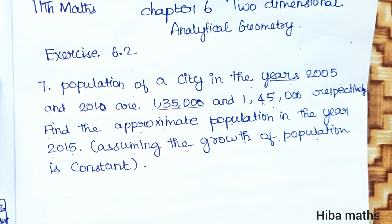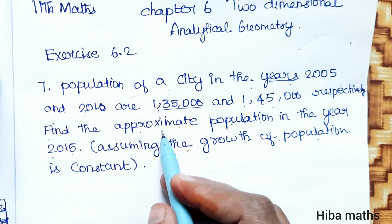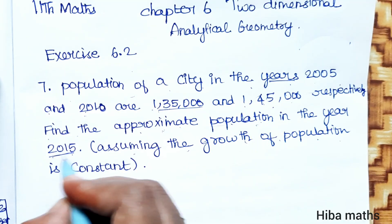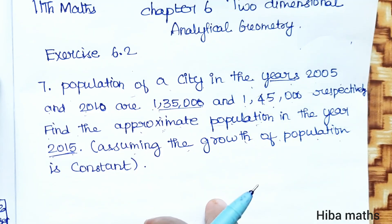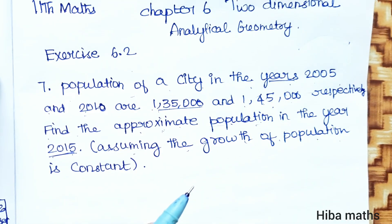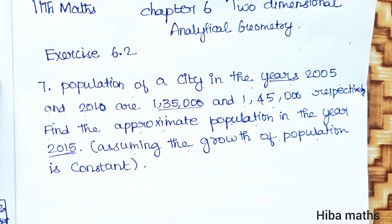So, two points. Because of the relationship, that is the equation. We will find the approximate population in the year 2015 by substituting that value into the equation.